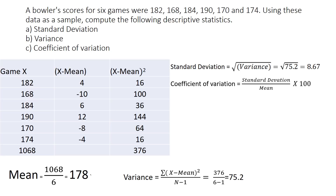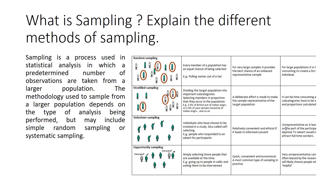The coefficient of variation uses the formula: standard deviation divided by mean, multiplied by 100. With standard deviation 8.67 and mean 178, the coefficient of variation is 4.87%.